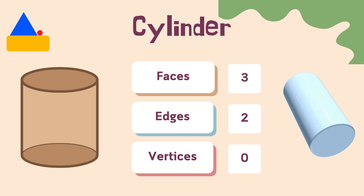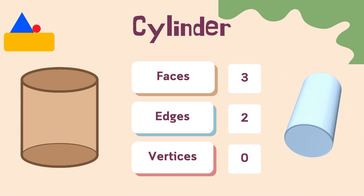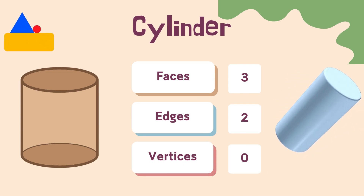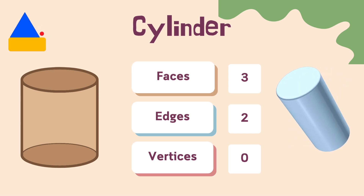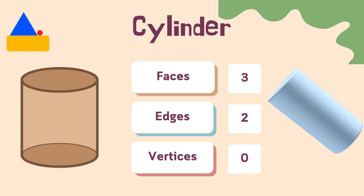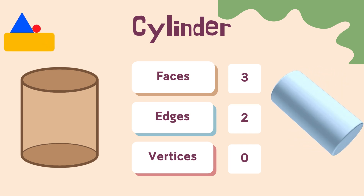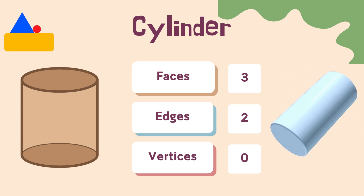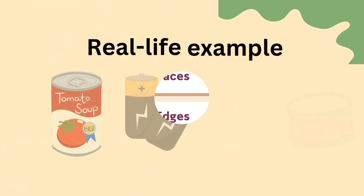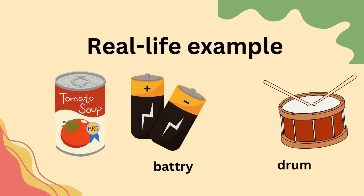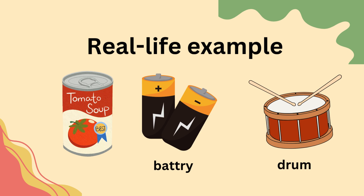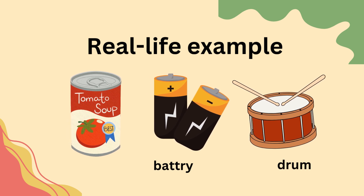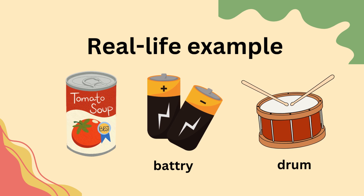Hello. I'm a cylinder. I have two flat faces — both are circles. I have one curved surface that wraps around me. And I have no corners at all. I look like a can of soup, a battery, or a drum. I'm smooth and round.